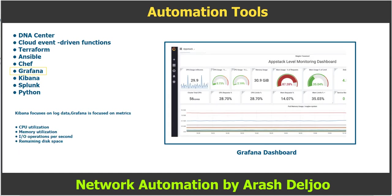The next automation tool is Grafana. Grafana is an open source tool for data visualization, analytics, and monitoring. It can be deployed either on premises or managed in the cloud. There is also a software as a service offering available. Whereas Kibana focuses on log data, Grafana is focused on metrics.